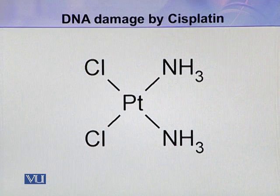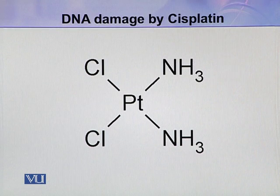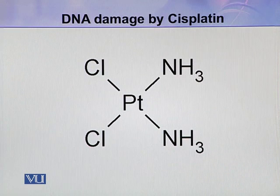Here is the structure of Cisplatin. Two chloride ligands are present and two ammonia groups are present, all attached to one platinum atom.